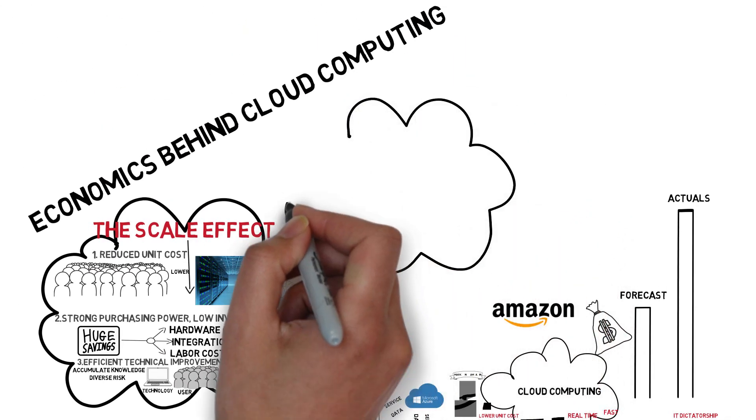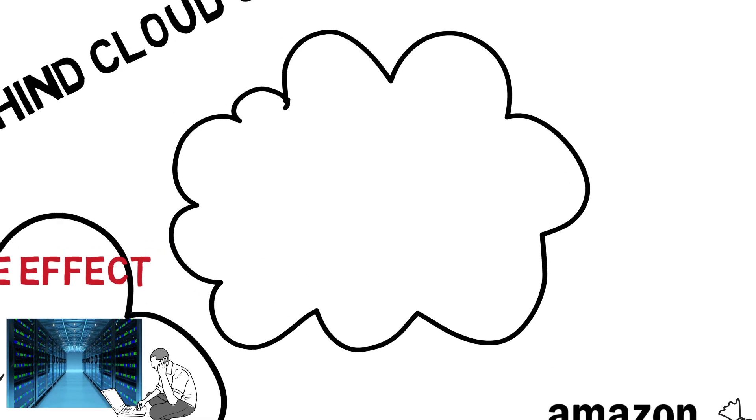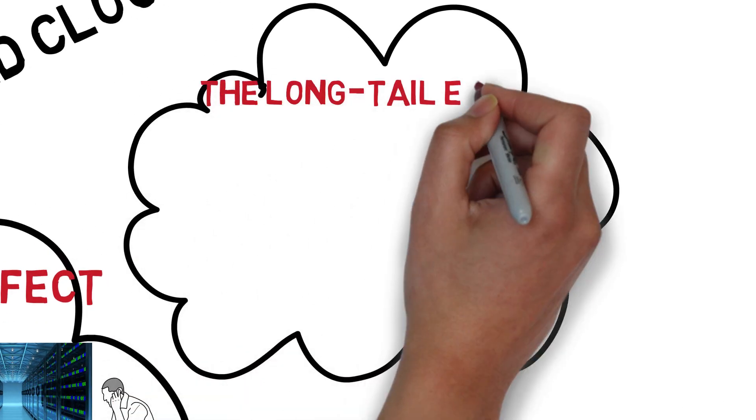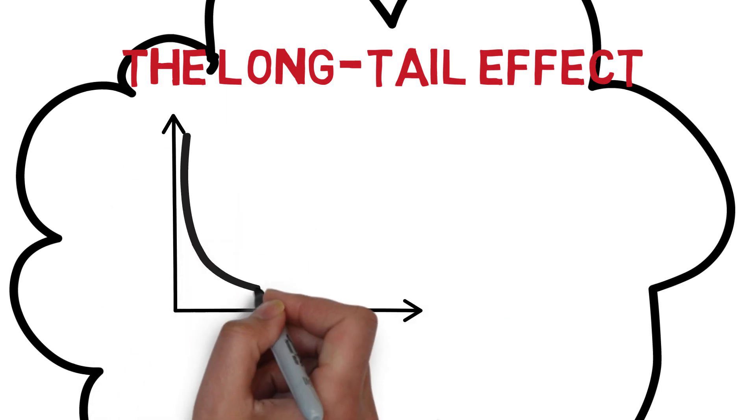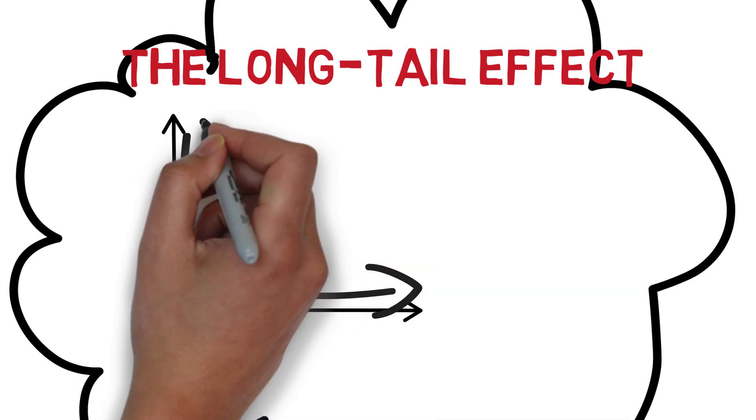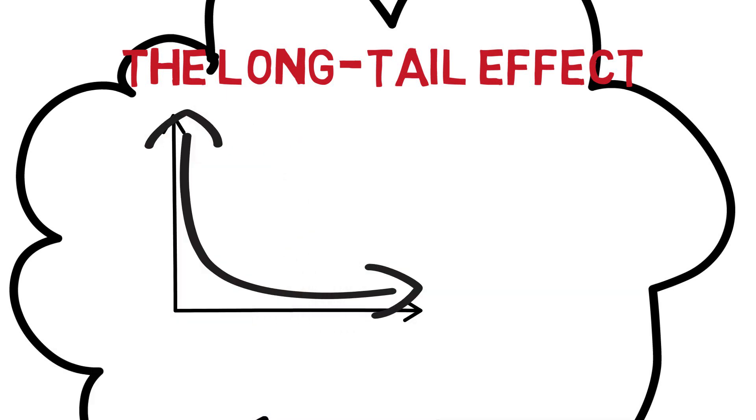Besides the scale effect, there is another economic effect, the long-tail effect. As shown in the chart below, a very small number of individuals on the horizontal axis attribute to a very high unit value on the vertical axis.